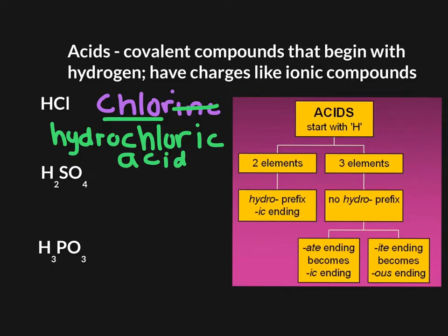What about all those polyatomic ions we've been working with? Here we have H₂SO₄. Again, it begins with H, so we have an acid. We have three different elements, so we do not add the hydro prefix. Instead, we look at the anion ending. Do we have an '-ate' ending or an '-ite' ending? We look up SO₄ on our gold sheet. SO₄ is sulfate, so we drop the '-ate' ending and add '-ic.' However, this one is not simply 'sulfic acid.' We actually put the '-ur' back in.